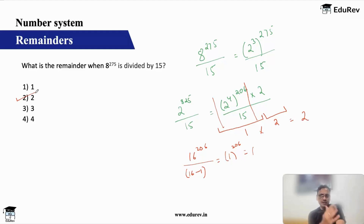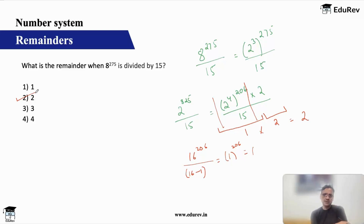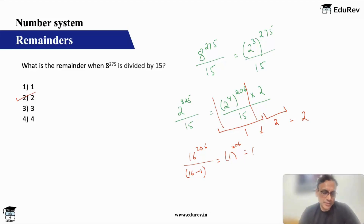So on the face of it, this did not look like remainder theorem, but you can see how easily remainder theorem can be applied here. Remainder theorem actually can be applied in a lot more cases than you think. This also could have been done by cyclicity because your divisor is 15 and your dividend is single digit 8, but that cyclicity could have been long. With remainder theorem we get the answer in one shot.